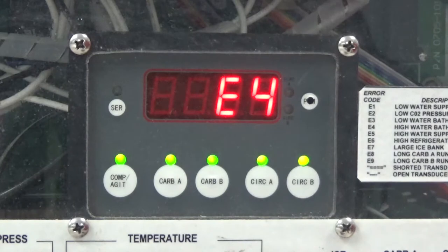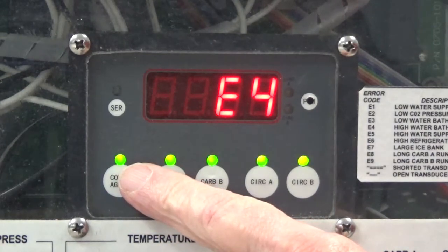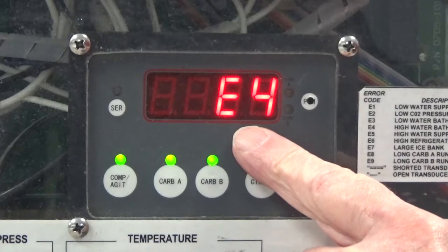First thing we're going to check is whether the green light above the compressor agitator button is on steady or blinking, and it needs to be on for the compressor to run. We're going to first follow the troubleshooting steps for if the green light is on steady.